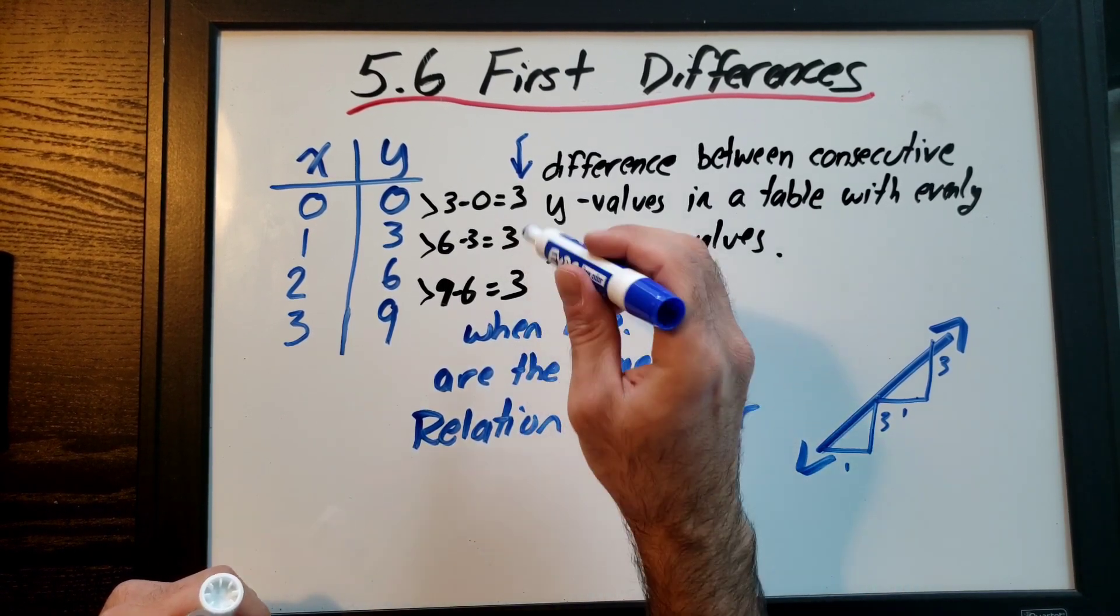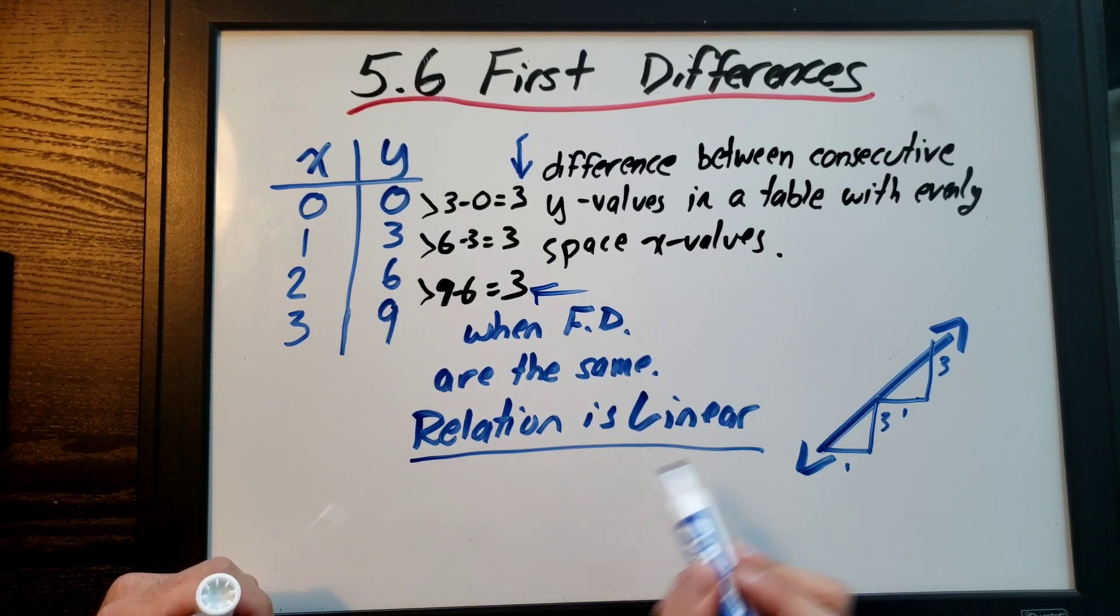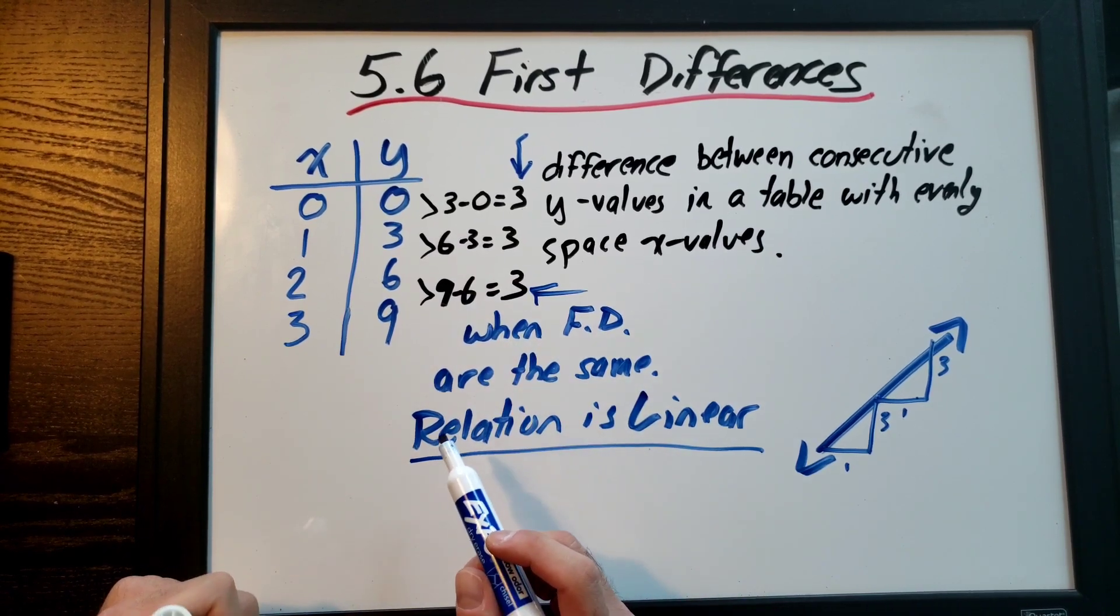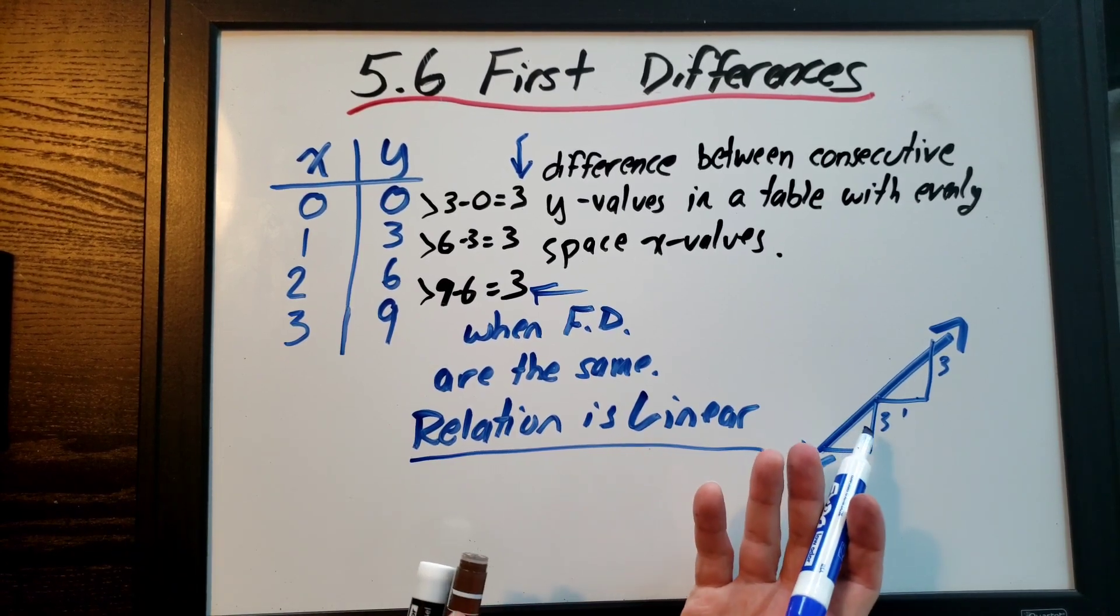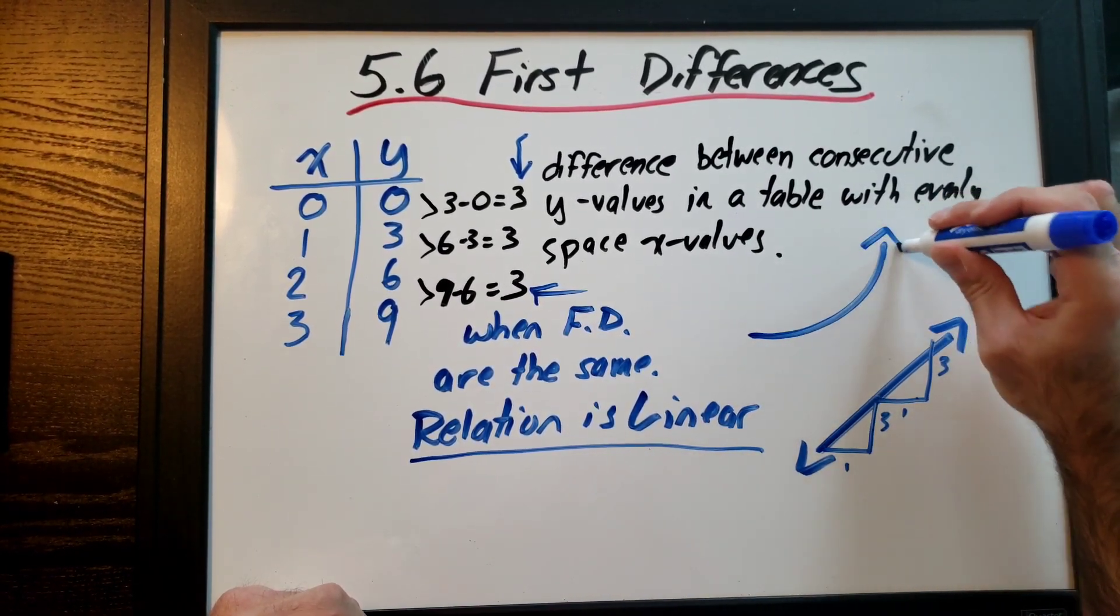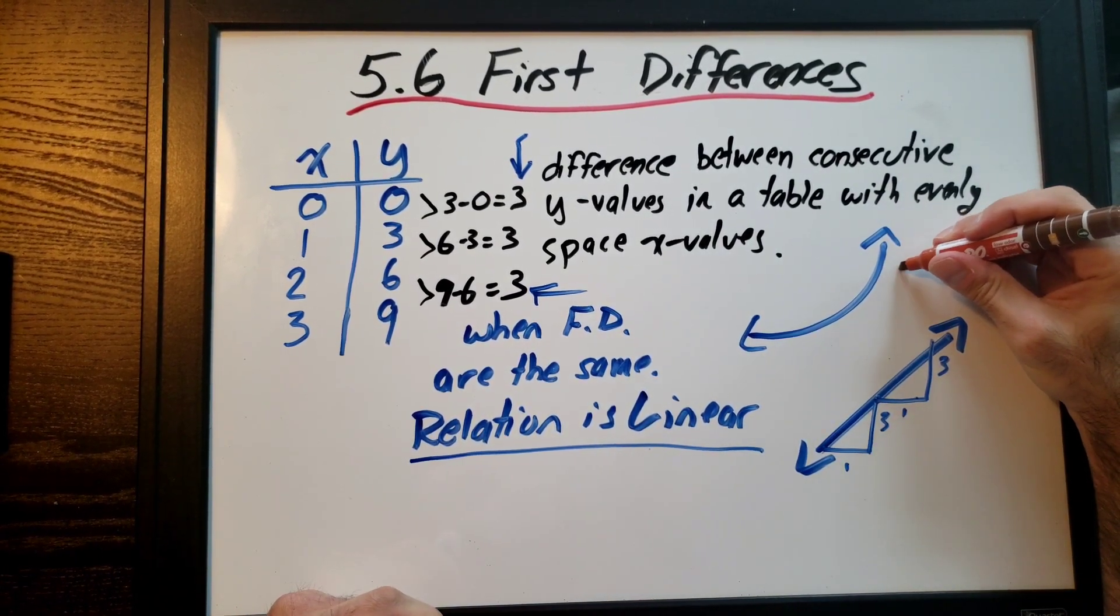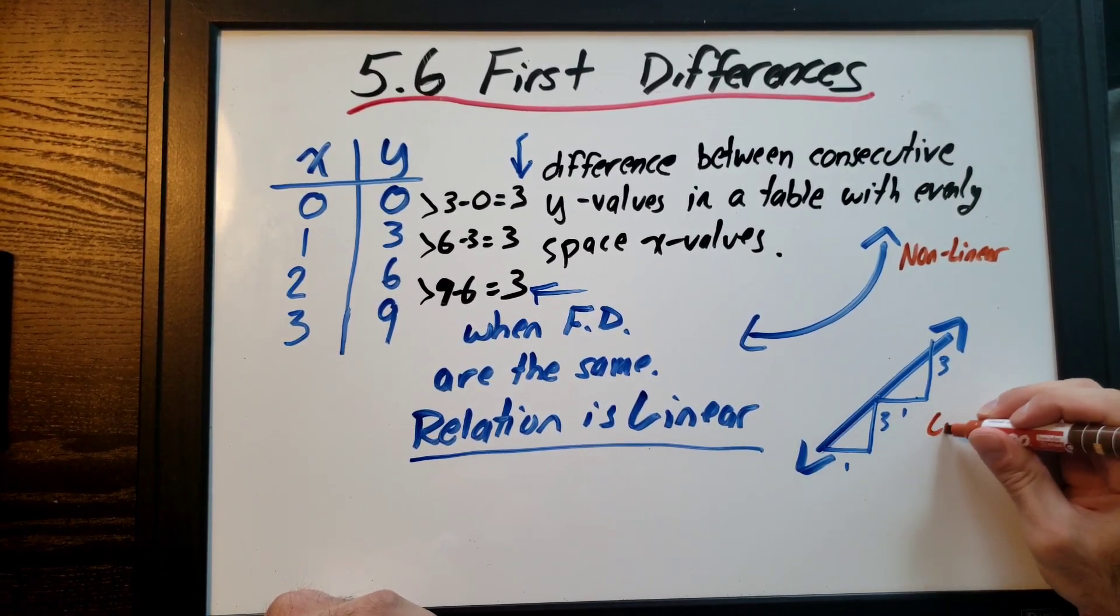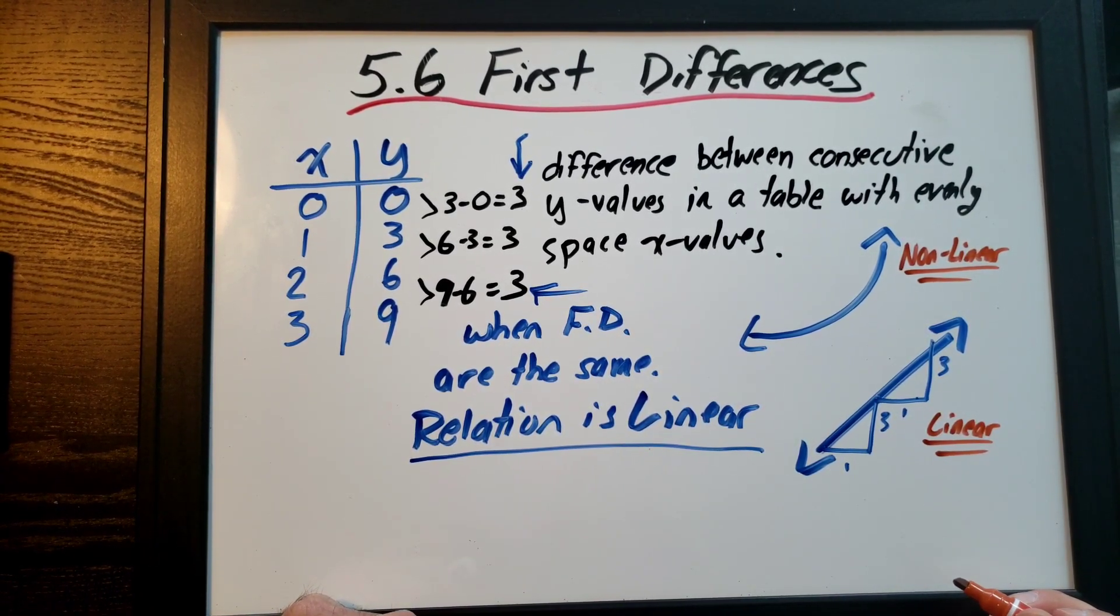Okay, so why do we use first differences? Sometimes we just want to figure out if something is a line or not. Is the relation linear or not? So if you have a table of values, you can find your first differences and determine whether a relation is linear. If you're looking at a graph, just look at it. If it's a line, it's linear. If it is not a line, this is nonlinear.